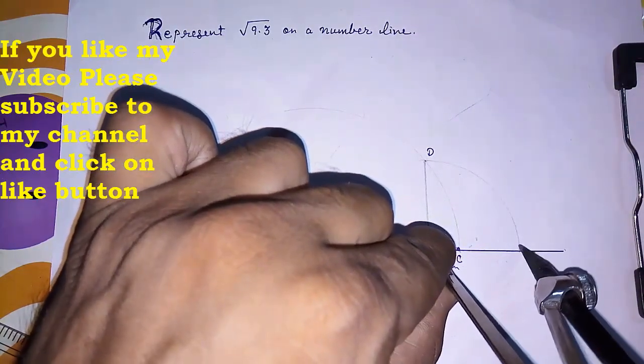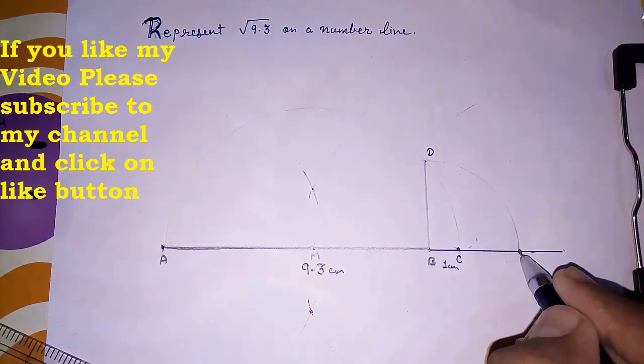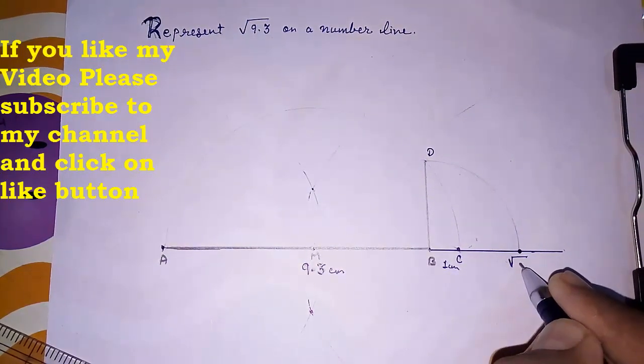Where this arc is intersecting on this straight line, that point will be your root 9.3.